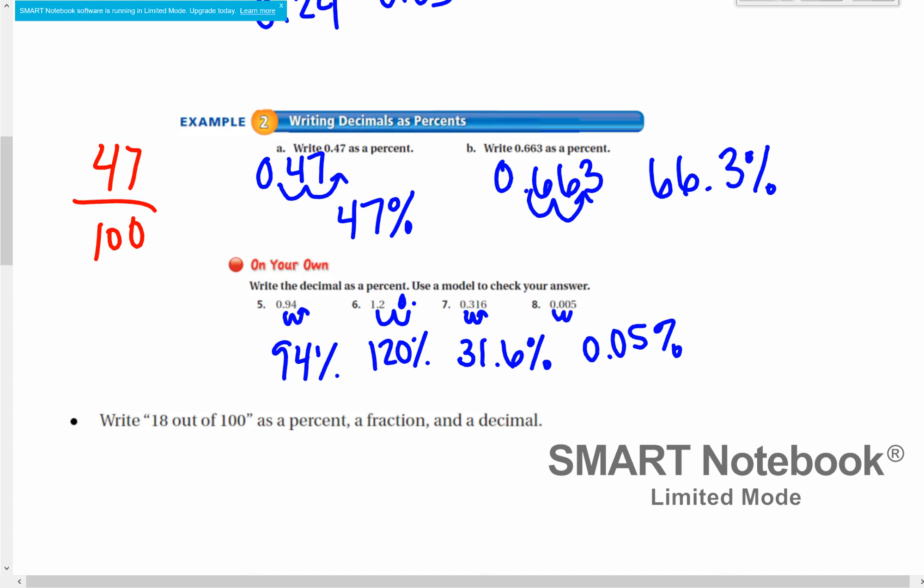Same thing here. The decimal 663 thousandths as a fraction would be 663 over 1,000. We could keep 66.3 over 100 since we have 66.3%, however, we don't want a decimal in a fraction. So we would prefer this number, we just multiply by 10 to get 663 over 1,000.